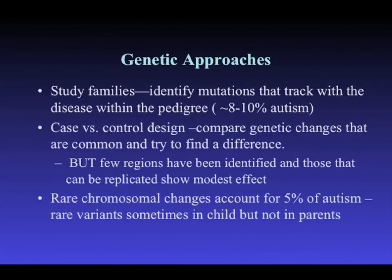Another broadly applied approach — not just to autism but to schizophrenia and other neuropsychiatric diseases — is the case-control design known as genome-wide association studies (GWAS). You look for common variation, things seen at a frequency usually greater than 5% in the population, and see if there's something different about cases compared to controls. Generally, for neuropsychiatric diseases, this has not found many specific genes associated with diseases such as autism — it has found some regions, but has not yielded a lot of fruit.